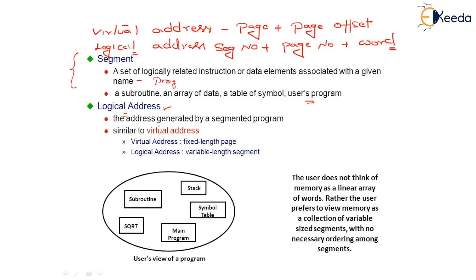Let us see how a logical address is mapped into a physical address. When a system follows logical memory or segmented memory — both are the same — the address released by the CPU is a logical address. For example, the CPU releases address 2, 4, 51. This is the segment number, this is the page number within the segment, and this is the word address within the page.